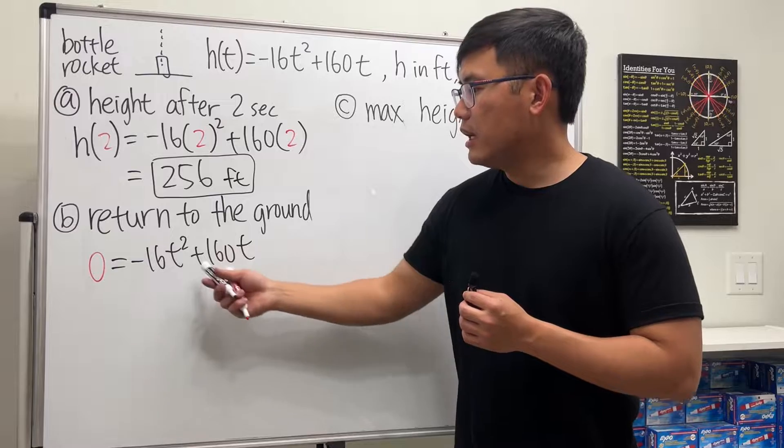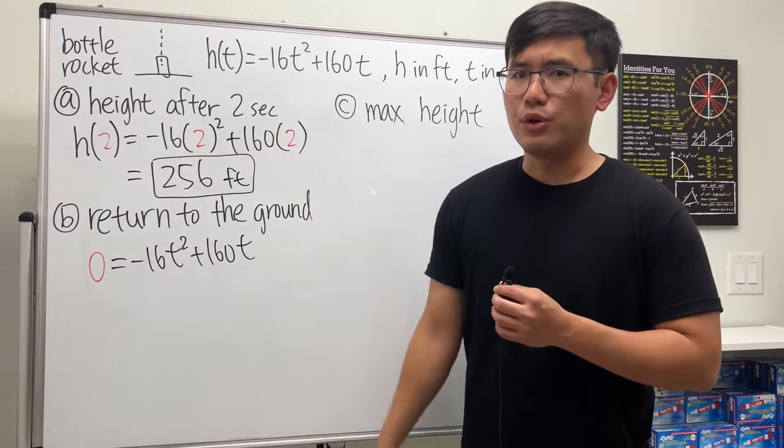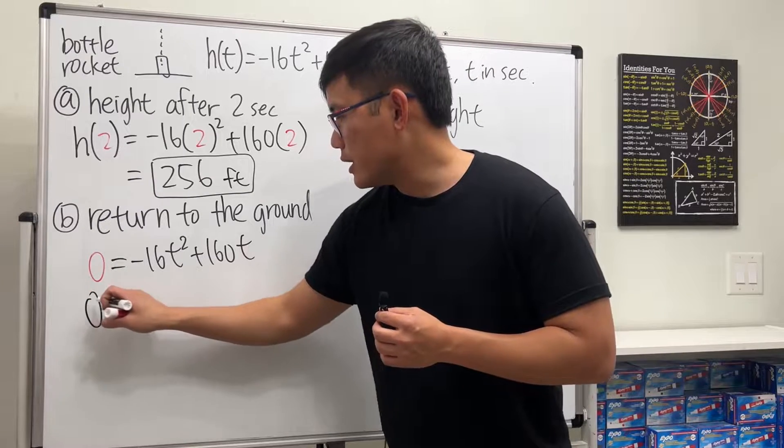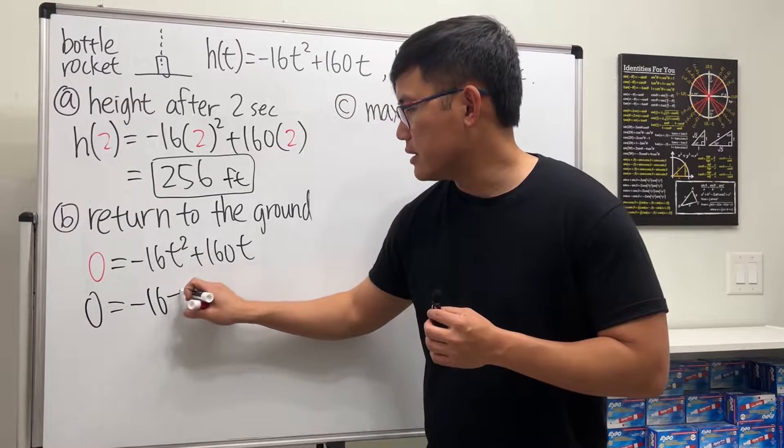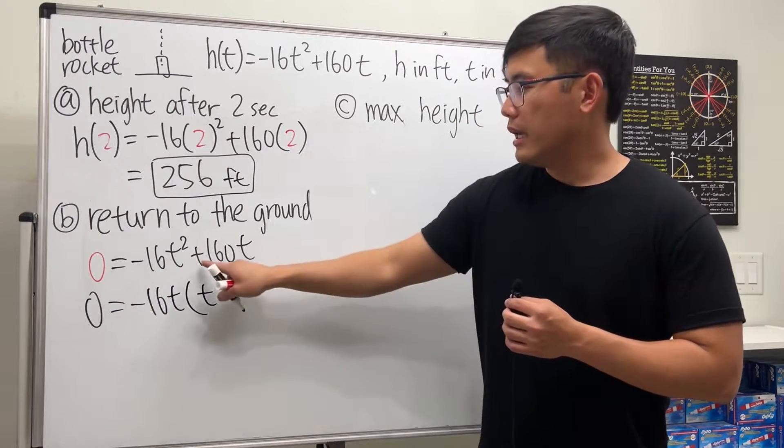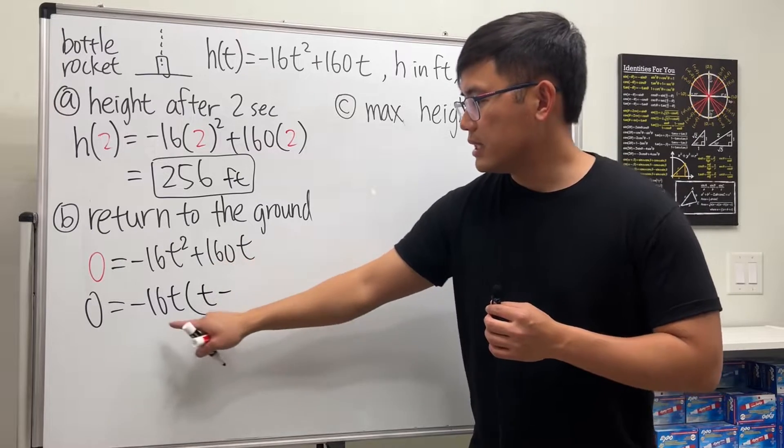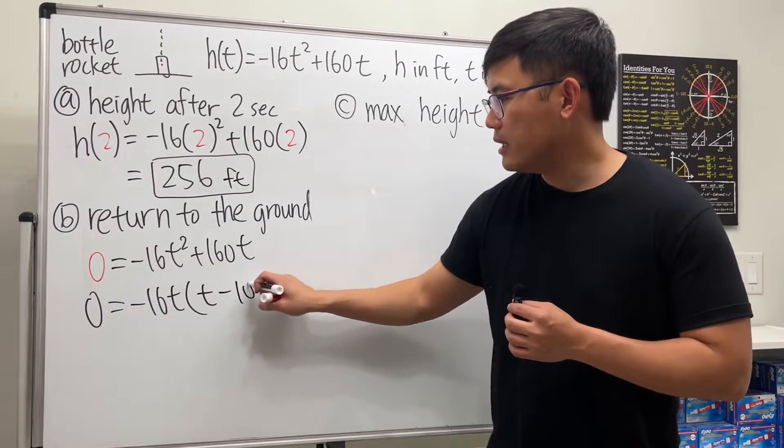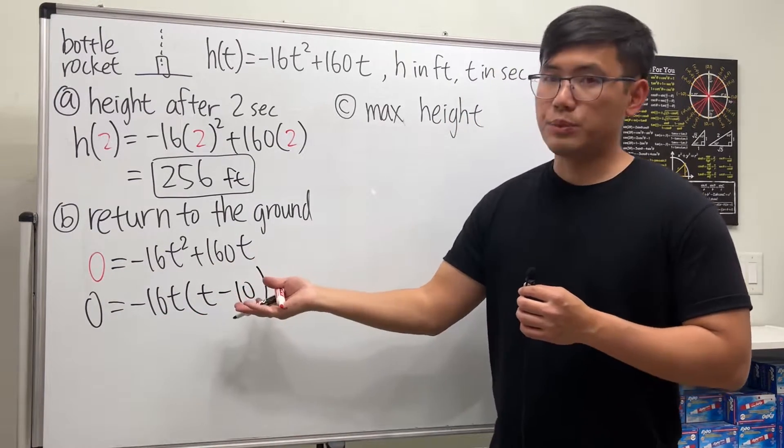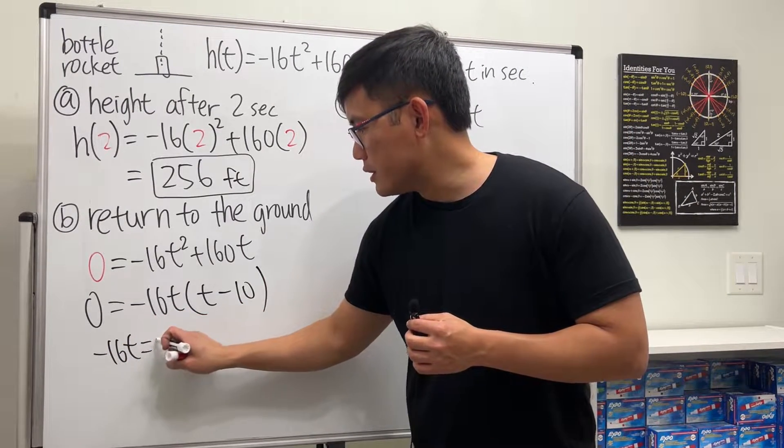Notice both terms have t and 16. When we have the negative in front, let's factor that out as well. We get 0 = -16t(t - 10). Factoring out -16t, we get positive t here. We took out the negative already, so it's a minus here. 160 divided by 16 is 10, and the t is out already.